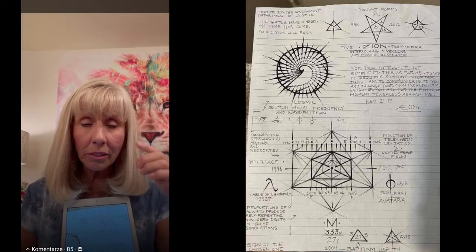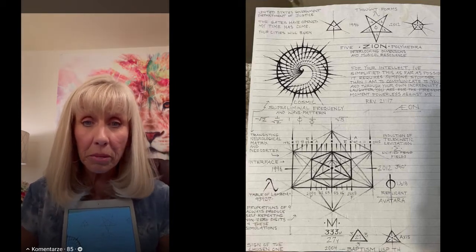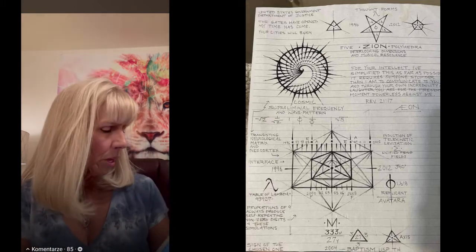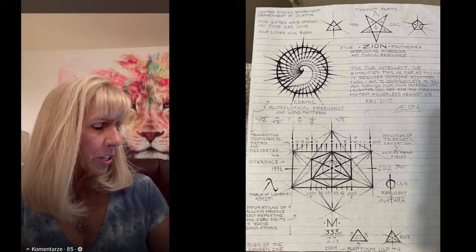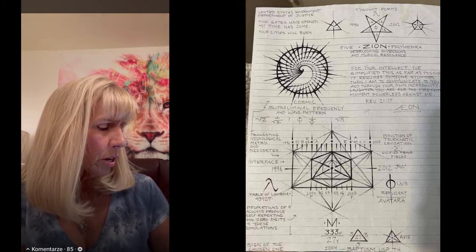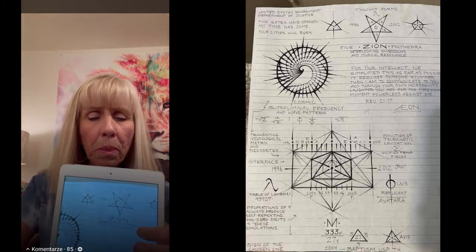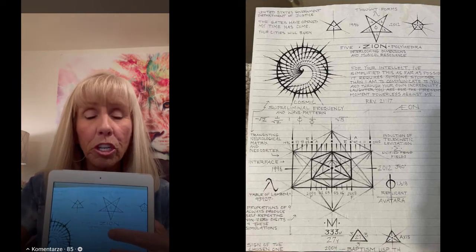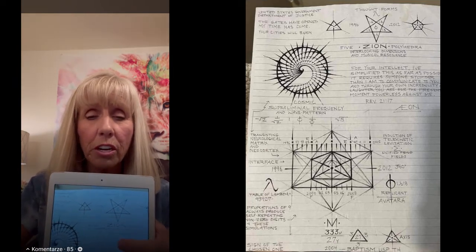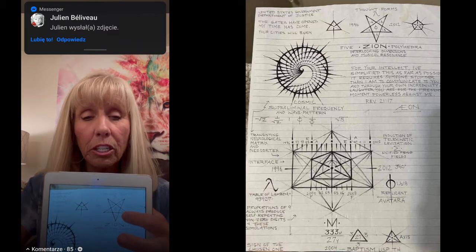Five Zion of polyhedra, interlocking dimensions and musical residence. Fifth dimension, sixth dimension, musical residence, design of the mind. They'll never get there, he is calling them that.